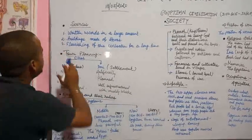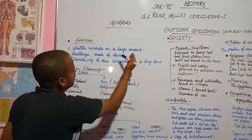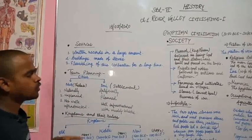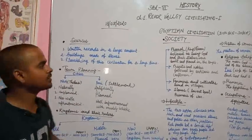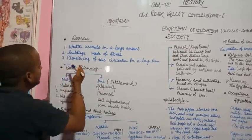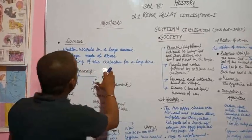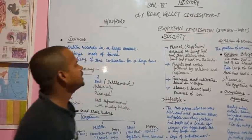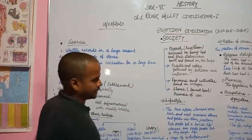We have written records of this civilization in a very large amount. Buildings were made of stones, and they were flourishing their civilization in a very systematic way so that they lasted for a long period.